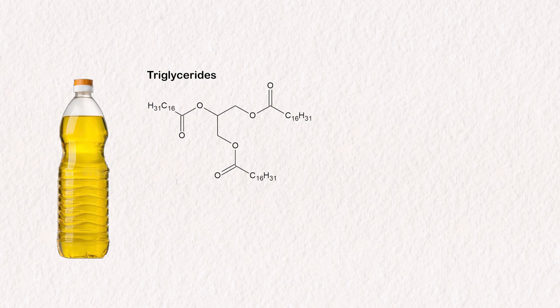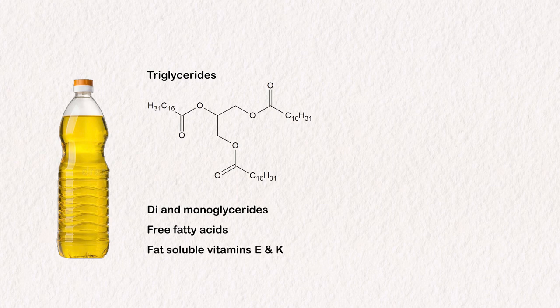Sunflower oil is mostly made up of triglycerides, which are essentially just a combination of glycerol and three fatty acids. Then there are also diglycerides and monoglycerides, which just have two or one fatty acid bound. Besides the glycerides, there is also a small amount of free fatty acids and some fat-soluble vitamins.